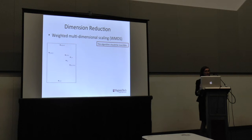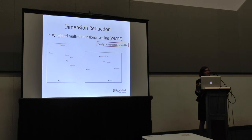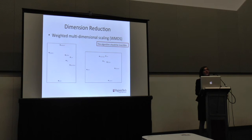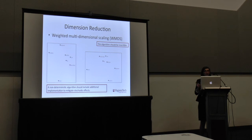Another finding is that WMDS is not deterministic. We may get this projection where all the animals are in a certain location, but to the algorithm, a rotated and flipped version is the exact same thing — all the pairwise distances are the same in both pictures. To a model, that doesn't matter. But to a user, that's very jarring. The user thinks the picture changed and gives meaning to it even though there isn't any meaning to be had. So we found it's important for non-deterministic algorithms to add additional implementation to mitigate these stochastic effects — mitigate the flipping and rotating — to make it smoother for a user.